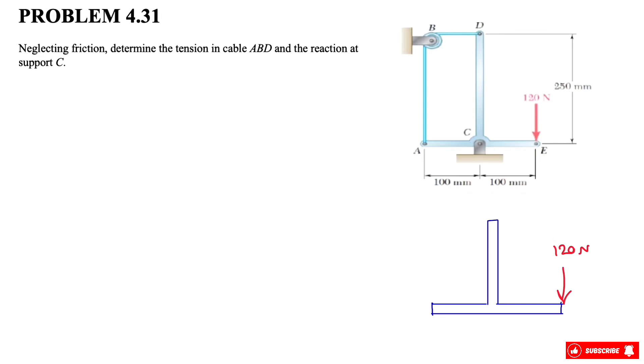Welcome back to the channel. In this video we're solving problem 4.31 from Beer and Johnston textbook. We have an assembly where we need to determine the tension in cable ABD and the reaction at support C.